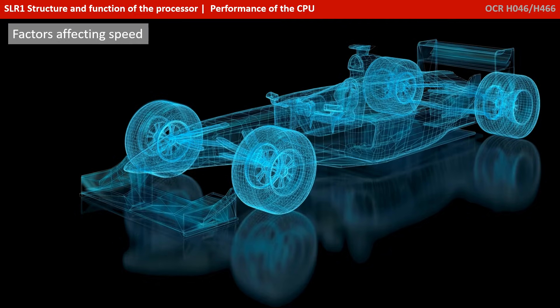Let's think about a typical racing car as an analogy before we look at the central processing unit itself. What are all the factors affecting the speed of this car? Well obviously we have the horsepower of the engine itself, but that's not the only factor. In the same way with a CPU, you've got how fast the clock can tick measured in hertz, but there are many other factors which affect how fast it can perform.